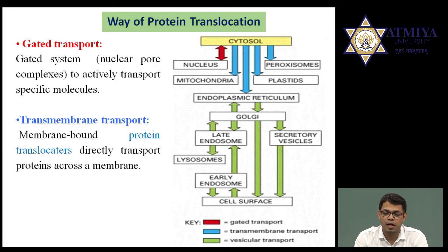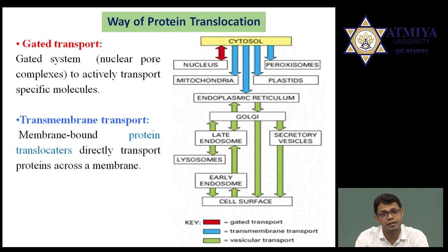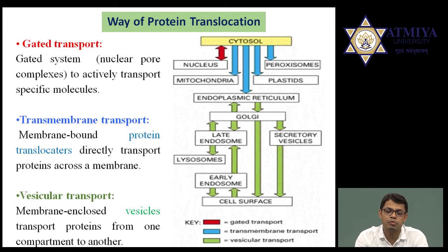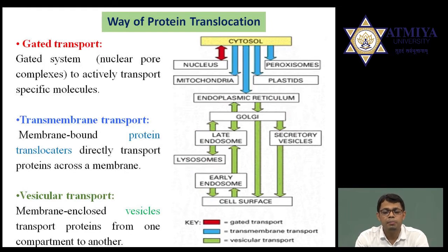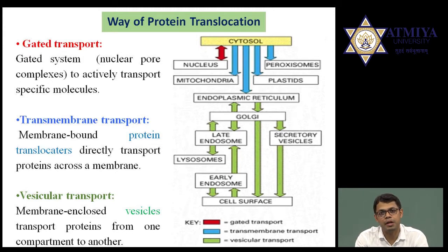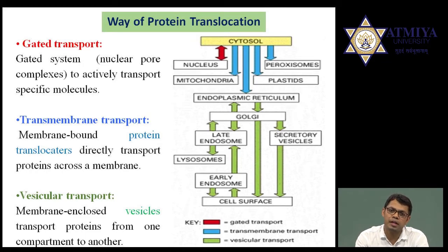Second is transmembrane transport. As shown in the diagram, if protein is produced in the cytoplasm and translocated to the peroxisome, plastids, mitochondria, or the endoplasmic reticulum itself, this is known as transmembrane transport. The third type is vesicular transport, which involves vesicles. Vesicles are formed from the endoplasmic reticulum, then pass to the Golgi body, and from the Golgi body they may become part of secretory vesicles, secreting protein outside the cell, or fuse to the plasma membrane.